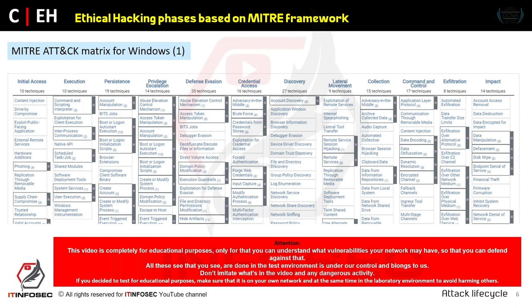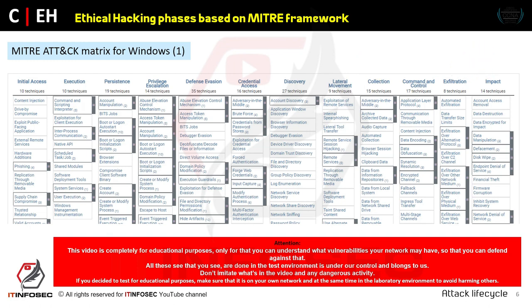Lateral movement occurs when a hacker successfully hacks one system in our network but cannot directly hack other systems. They may use the successfully hacked system to bypass security mechanisms and move into another system — for example, making our system a zombie for attacking or bridging to other systems in the network. This is called lateral movement, or technically, pivoting.